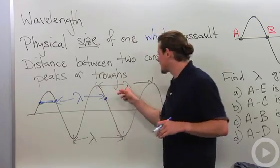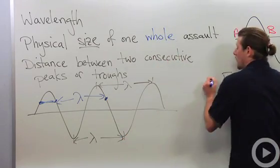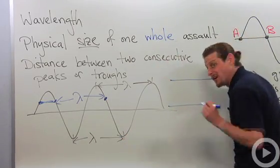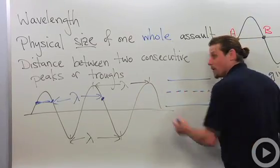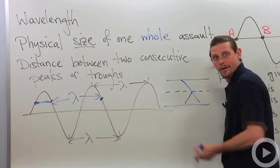Now what's this weird symbol I'm using for wavelength? This is a Greek letter lambda and we write a lambda like this. It's real simple. Backslash, forward slash. There you go. Lambda.